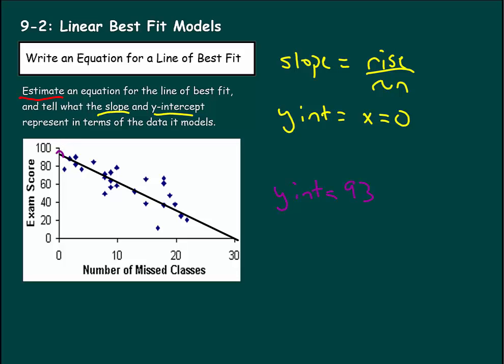And we can use this to find our slope. So we're at 0 and 93. Now let's see if we can find a spot on the line that we can use to measure. So try to find something that matches up pretty well with the graph here. For example, here looks like a pretty good spot. I see that the number of missed classes is 20, and that the exam score looks to be about 40.